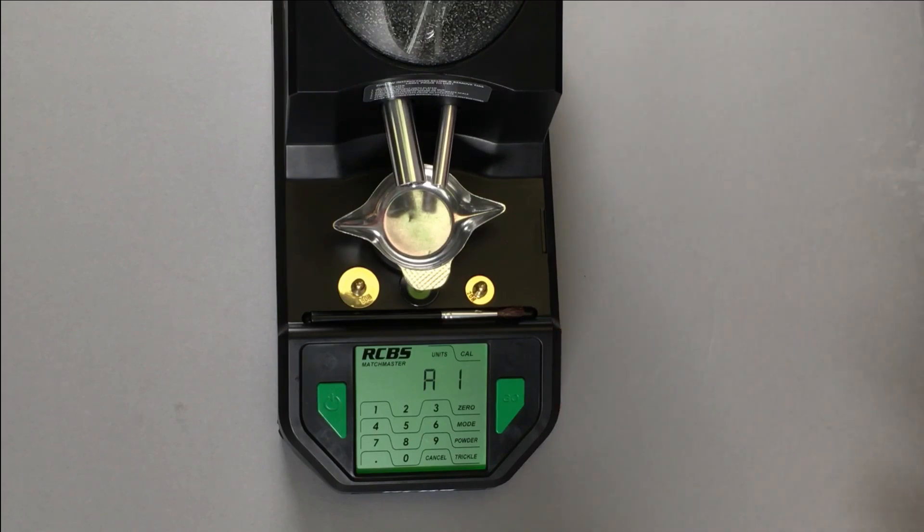After you set go, you'll see the A. This is where you input the powder size, one through four. One for your large and heavy powders, four for your small light powders. Once you input this number, you press go again.